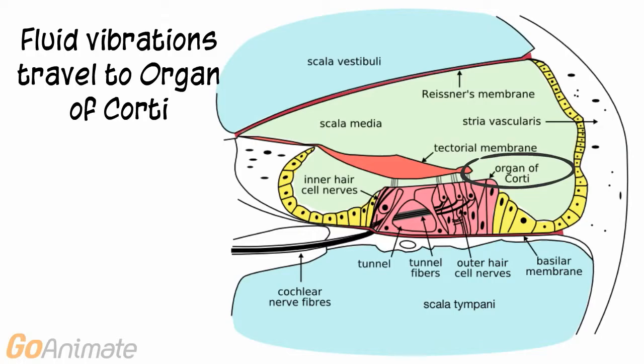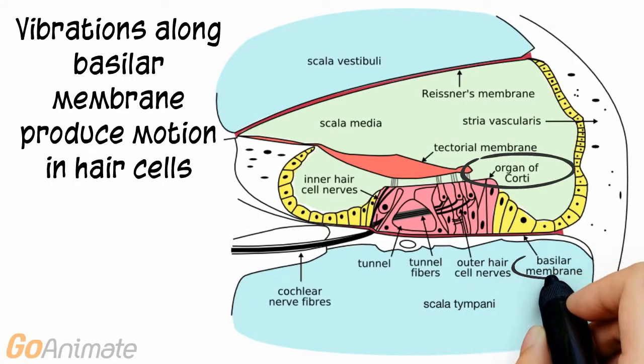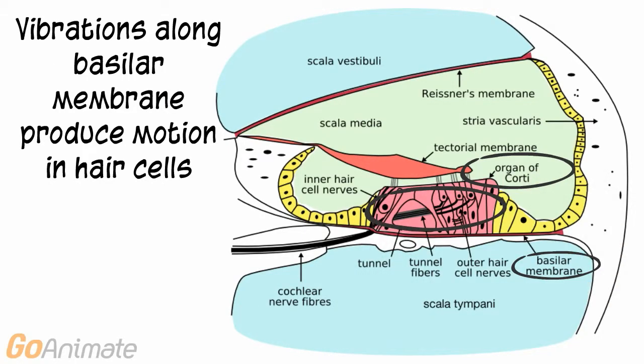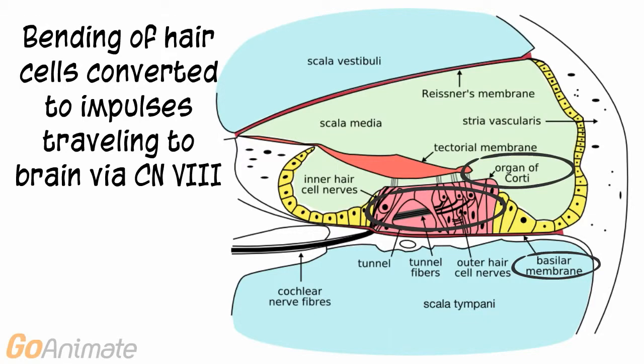The middle chamber, or scala media, contains the organ of hearing called the organ of Corti. The organ of Corti consists of two membranes connected by hair cells. The fluid vibrations are transmitted along the basilar membrane and picked up by the hair cells. The hair cells respond by sending impulses which travel to the brain via cranial nerve 8, and the brain interprets these impulses as hearing.